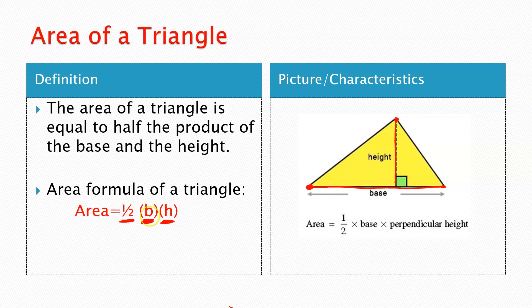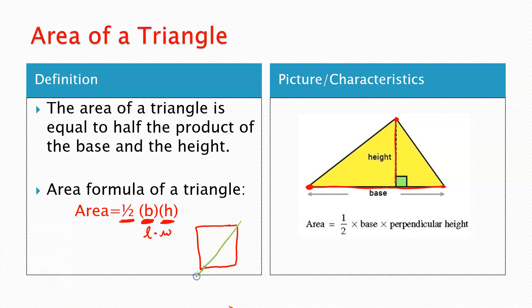And why is it this formula? Well, if you think of base and height as like your length times your width, that would give us length times width — the area for a square or a rectangle. What happens if I just take half of it? If I cut it in half, I end up with a triangle. So it's almost the same as a square or rectangle — length times width, base times height — but you do take half of it to create a triangle.